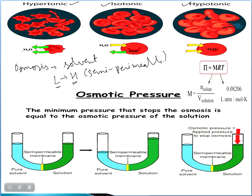There are three types of solutions: hypertonic, isotonic, and hypotonic. In a hypertonic solution, water moves outside the cell so the cell will shrink, because concentration is higher outside. In an isotonic solution, the concentration is the same on both sides, so water entering and leaving the cell is equal. In a hypotonic solution, more water goes into the cell so the cell will swell up.